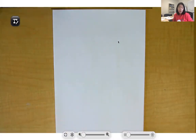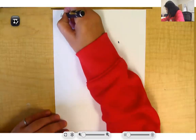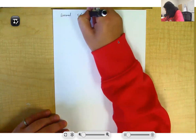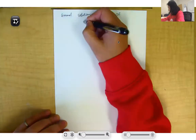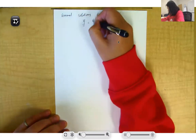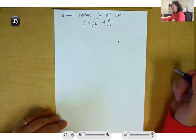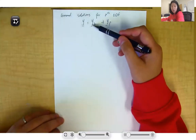The general solution for an n-th order ODE is also constructed by two parts: one is the homogeneous solution, and the other part is the particular solution. So the general solution for an n-th order ODE is constructed by the homogeneous part plus the particular part. We will first introduce how to solve the homogeneous part.